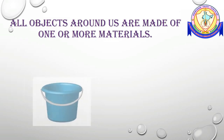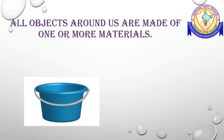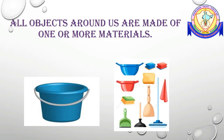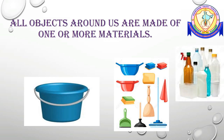All objects around us are made of different kinds of materials. Glass, plastic, steel, ceramic, wood, clay, and paper are materials used to make useful things. You will often find that the same material is used to make several kinds of things. For example, plastic is used to make buckets, mops, dusters, containers, bottles, etc.